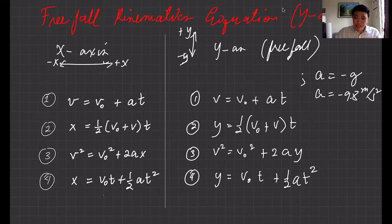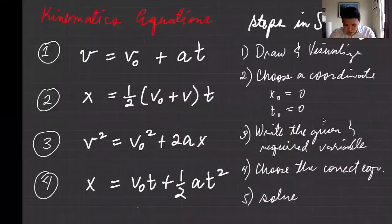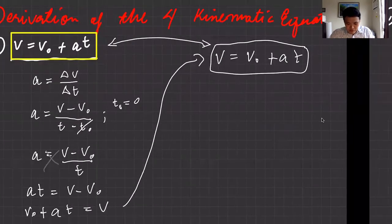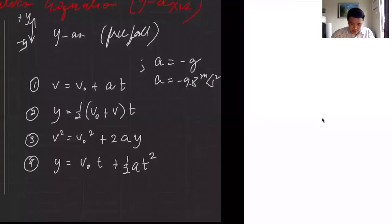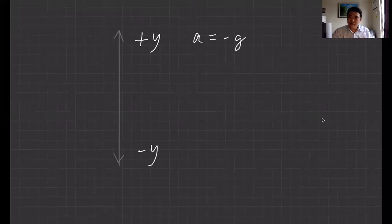So these are the kinematics equations for free fall. How do you use them when solving problems? Same procedure: visualize and draw the problem, choose the coordinate system — you usually start at y equal to zero, going downward is negative y, t-naught is zero. Write down the given and required variables, choose the correct equation, and solve. For free fall, it's always along the y-axis.